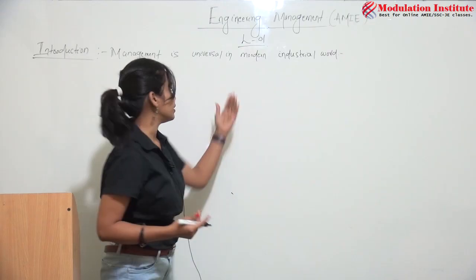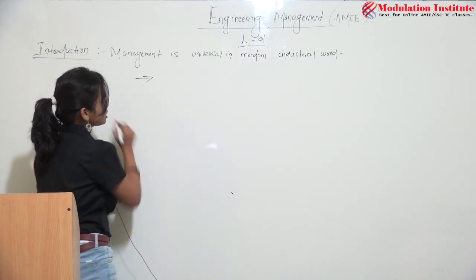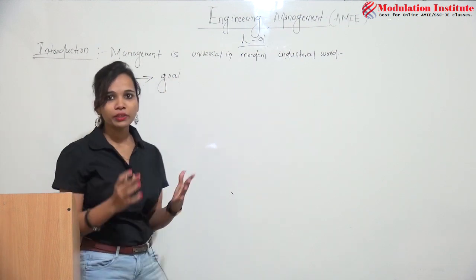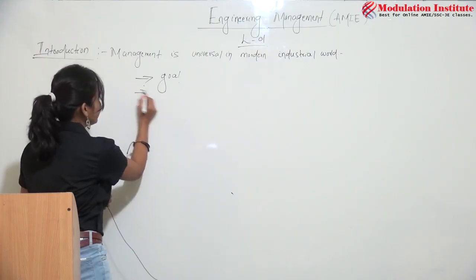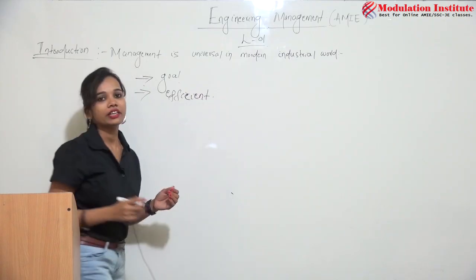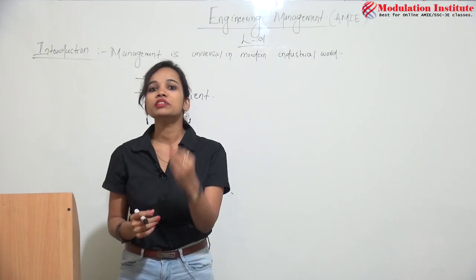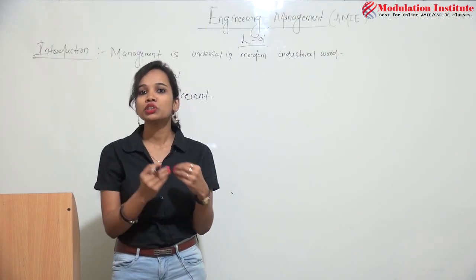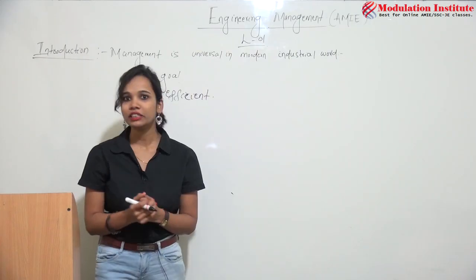Let us understand the objectives of engineering management. First, engineering management works on the goal of the organization — in any institution or organization, we work toward what goal we want to achieve. Second, it gives an efficient result. Efficient result means the result that can be achieved at minimum cost. So in this way, engineering management works on many aspects.